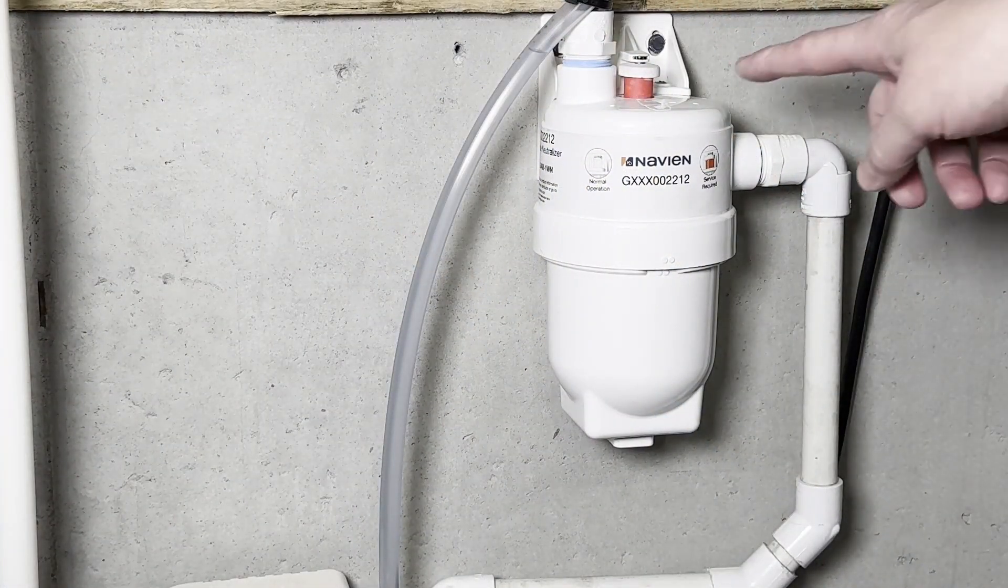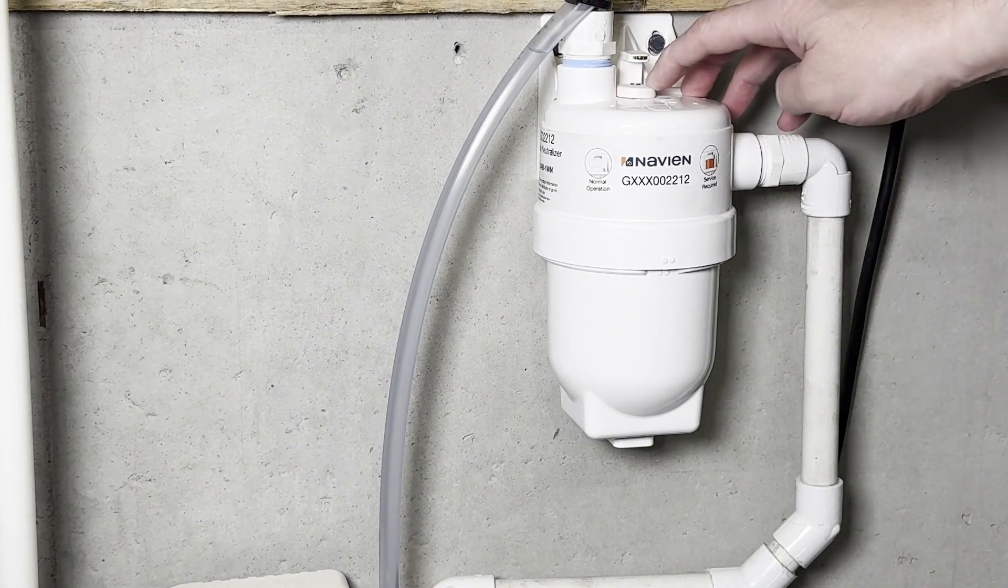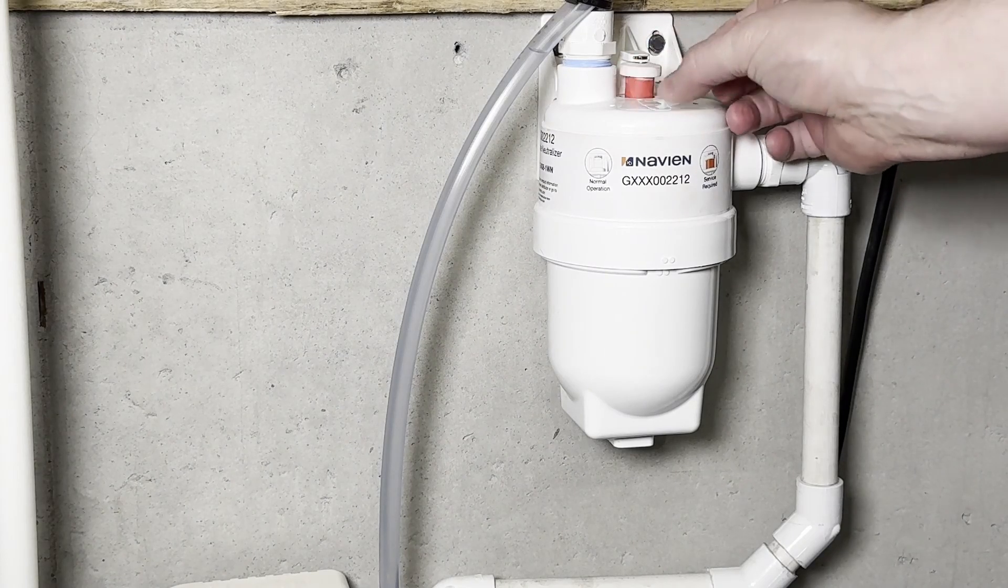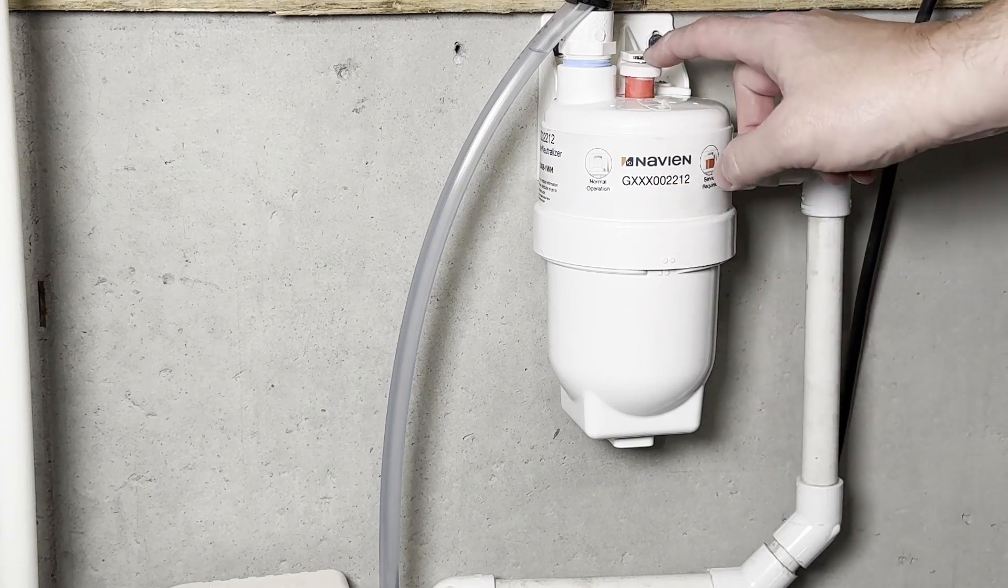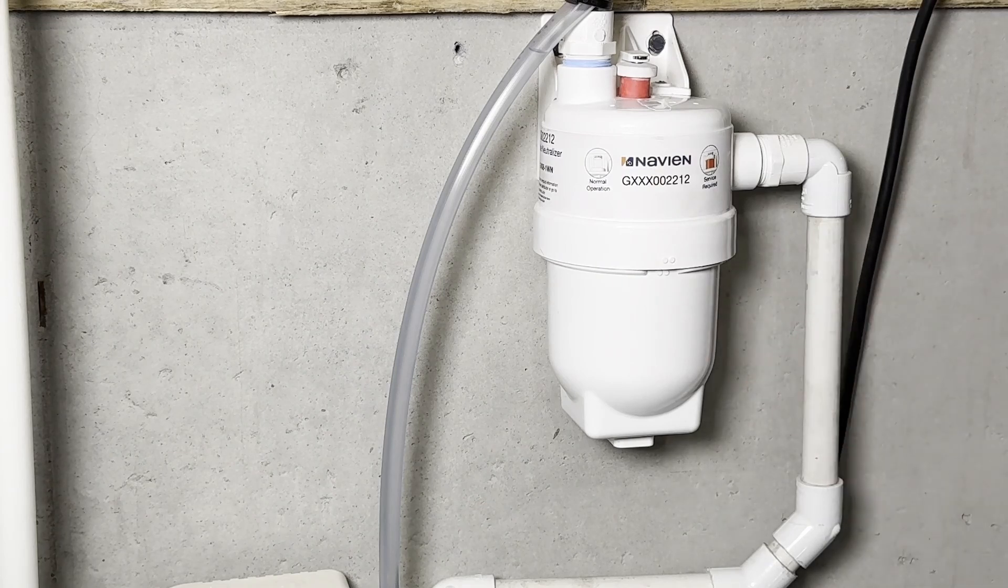Some of the eagle eyes amongst you may have noticed this little orange thing, and that's your indicator to tell you that the media needs replaced. There's just a magnet here, and that's how you reset it. I believe when enough pressure gets built up because of gunk down here, this little orange tab pops up and it tells you that it's time to change out the media.